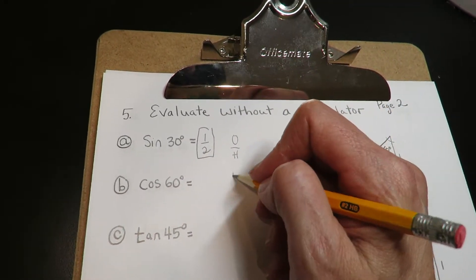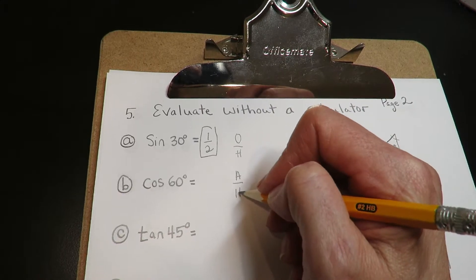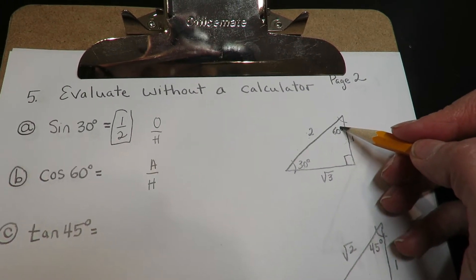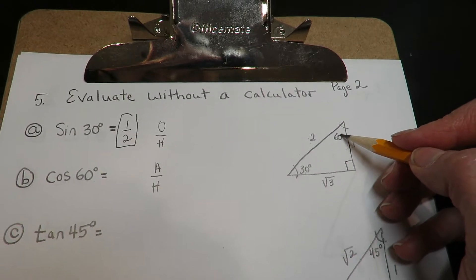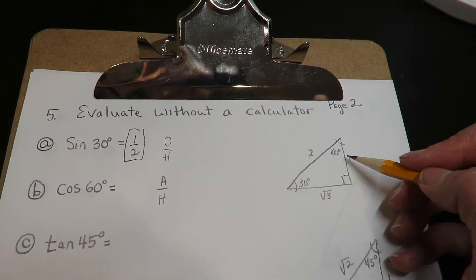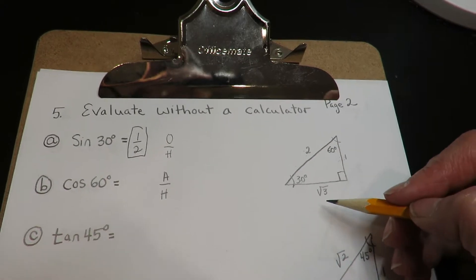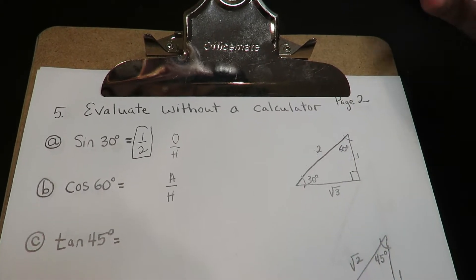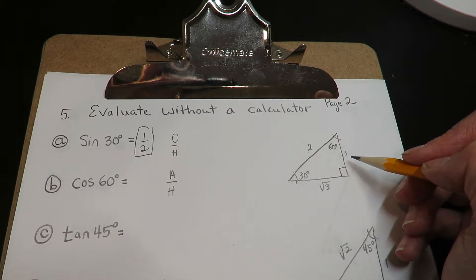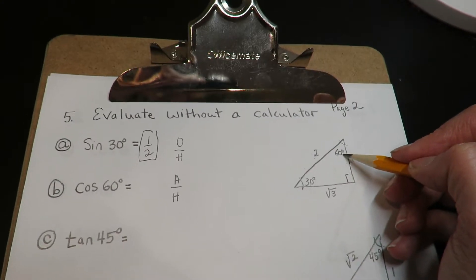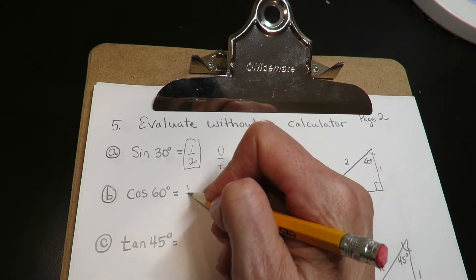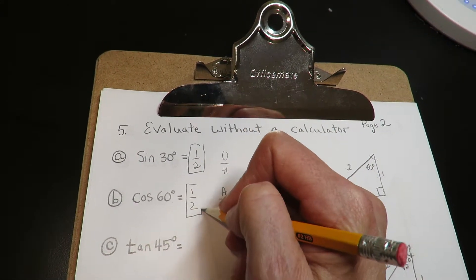Cosine is the adjacent over the hypotenuse. I stand at 60 degrees. Adjacent always touches the angle — so if you get a little confused, remember adjacent touches the angle and opposite is far away, on the other side of the angle. Adjacent to 60 is one and the hypotenuse is two. So this has the same answer: it's going to be one half.